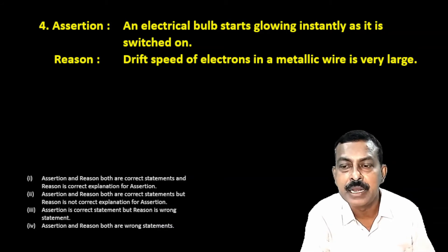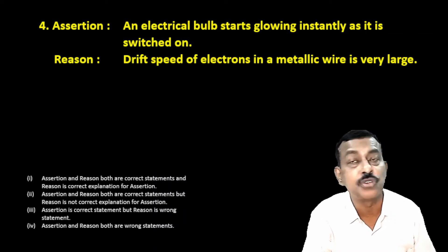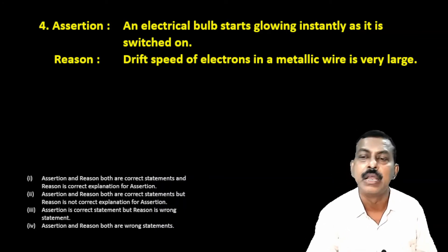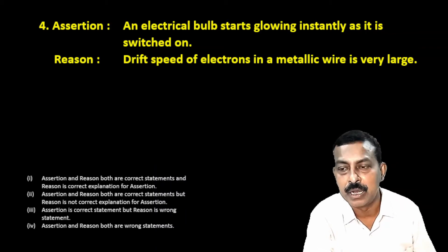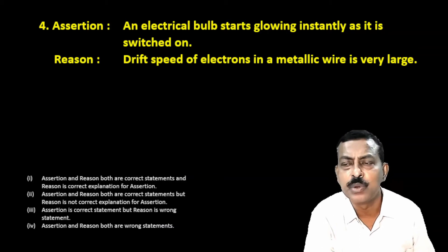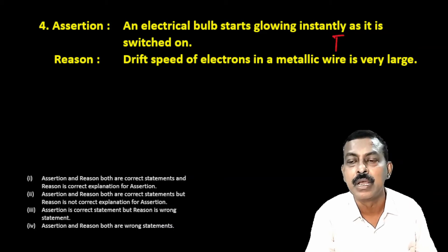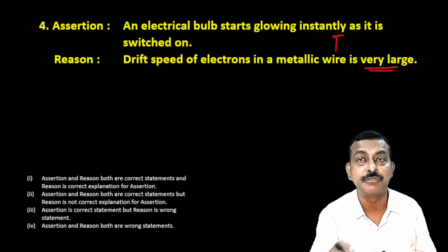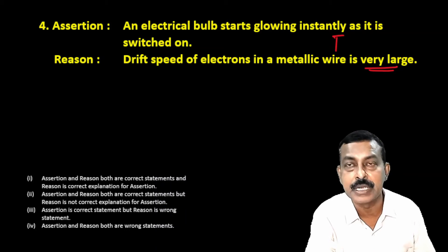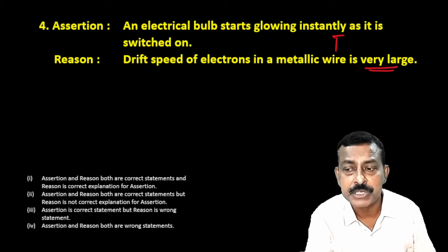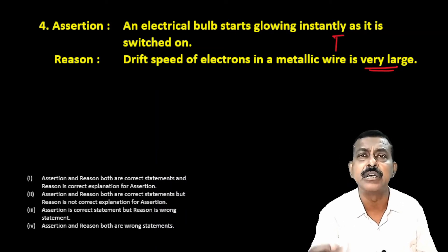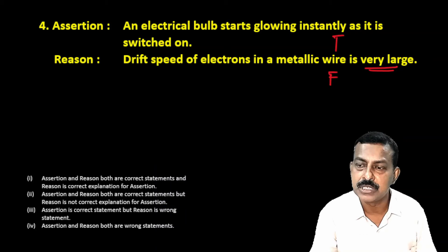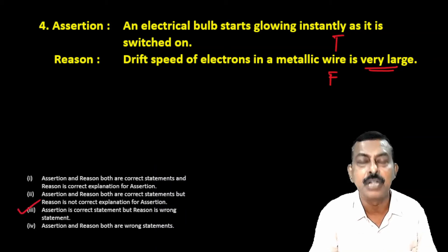Next question. Assertion: an electrical bulb starts glowing instantly when it is switched on. Reason: drift velocity of electrons in a metallic wire is very large. The assertion is true — the bulb glows immediately. However, the reason is wrong — drift velocity of electrons in a conductor is very small, only a few millimeters per second. So the assertion is correct but the reason is false, making the third option correct.